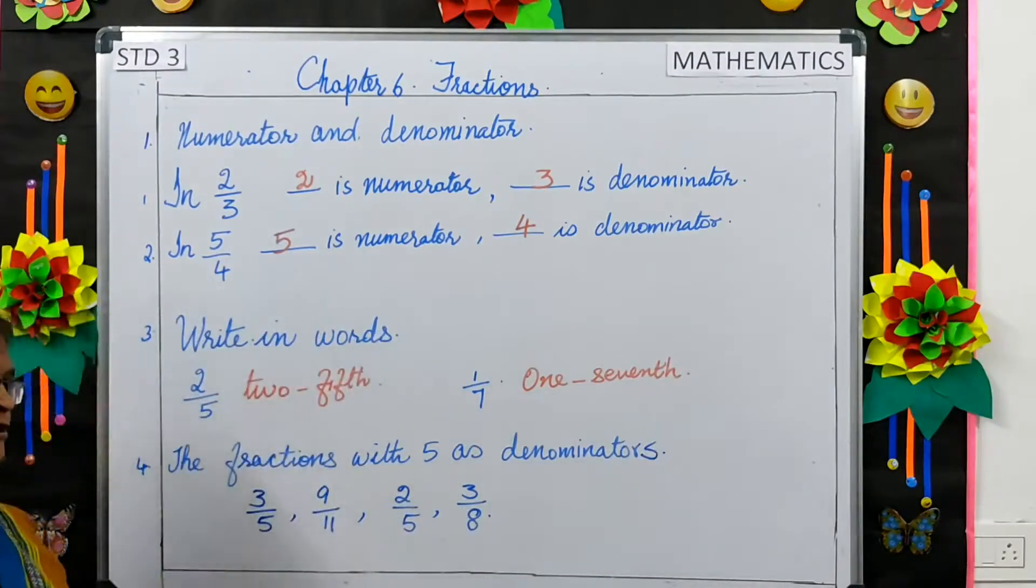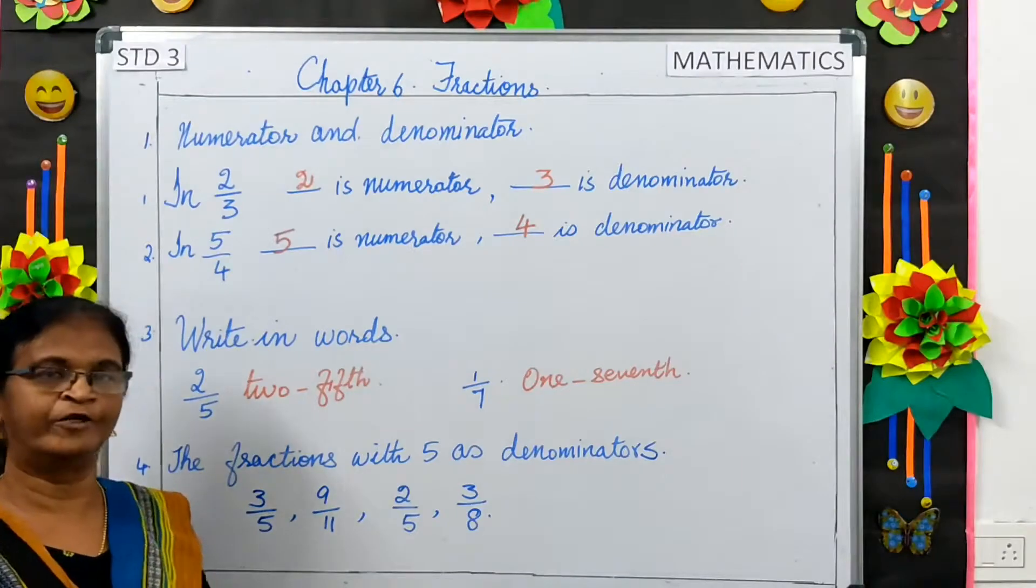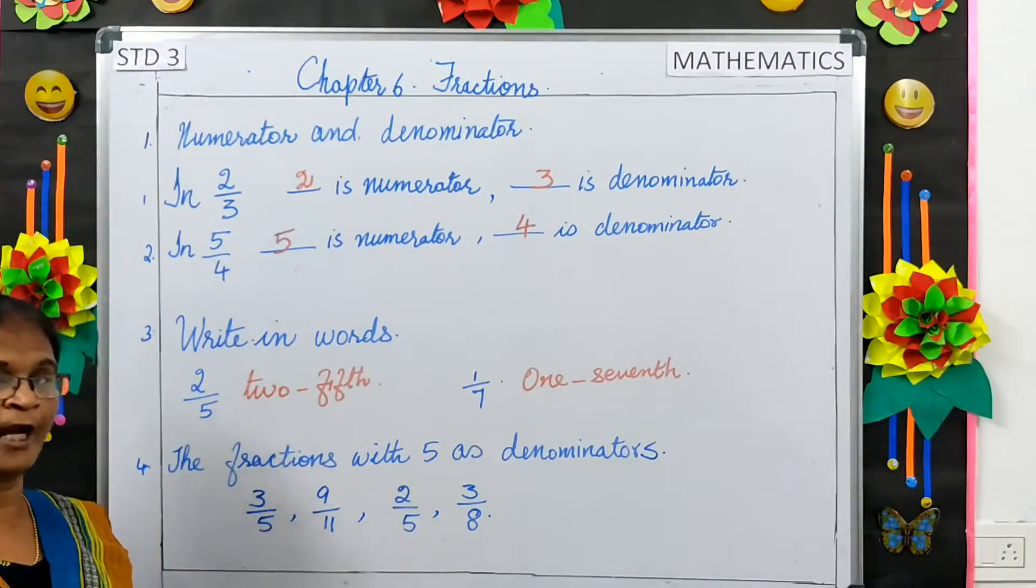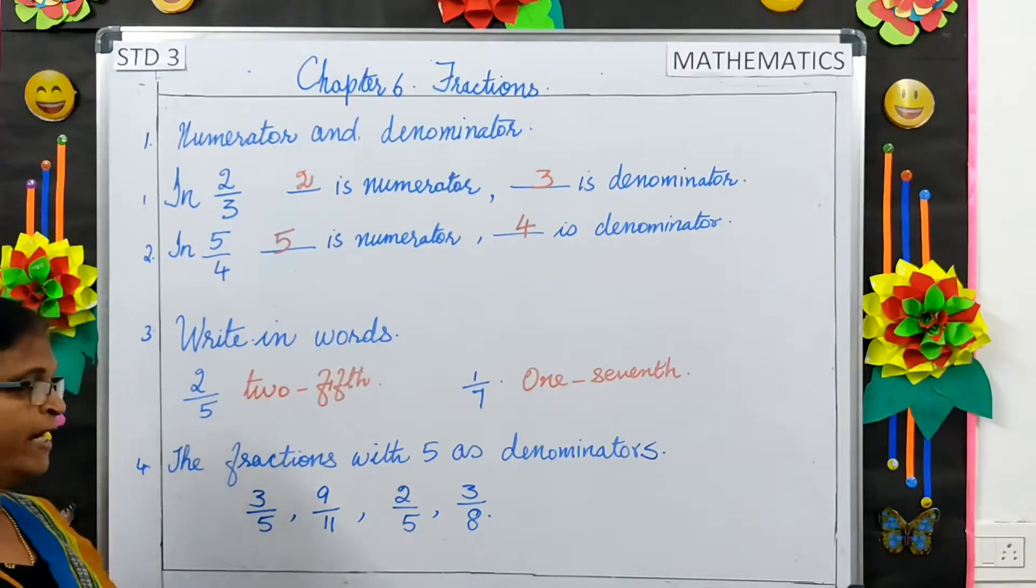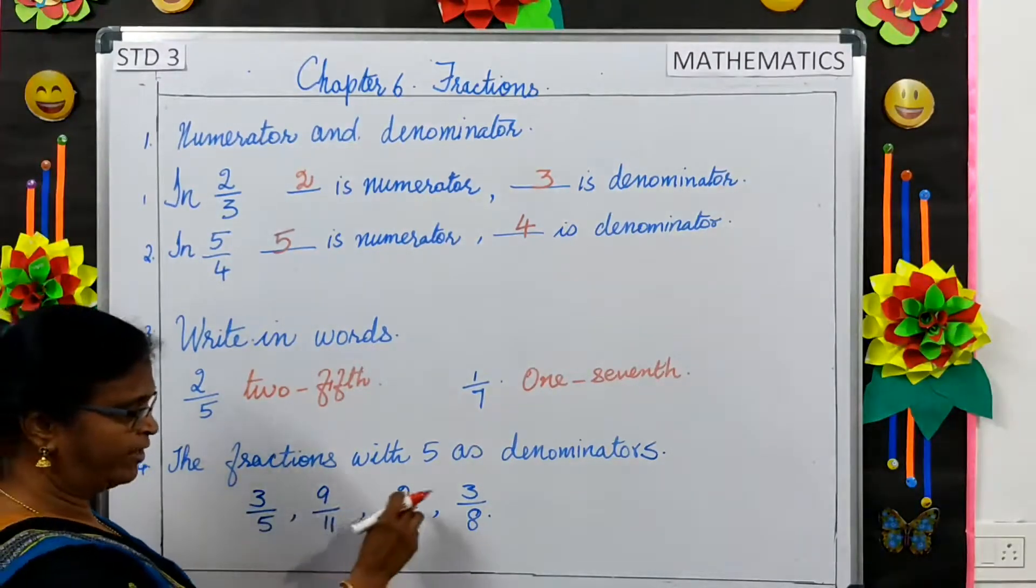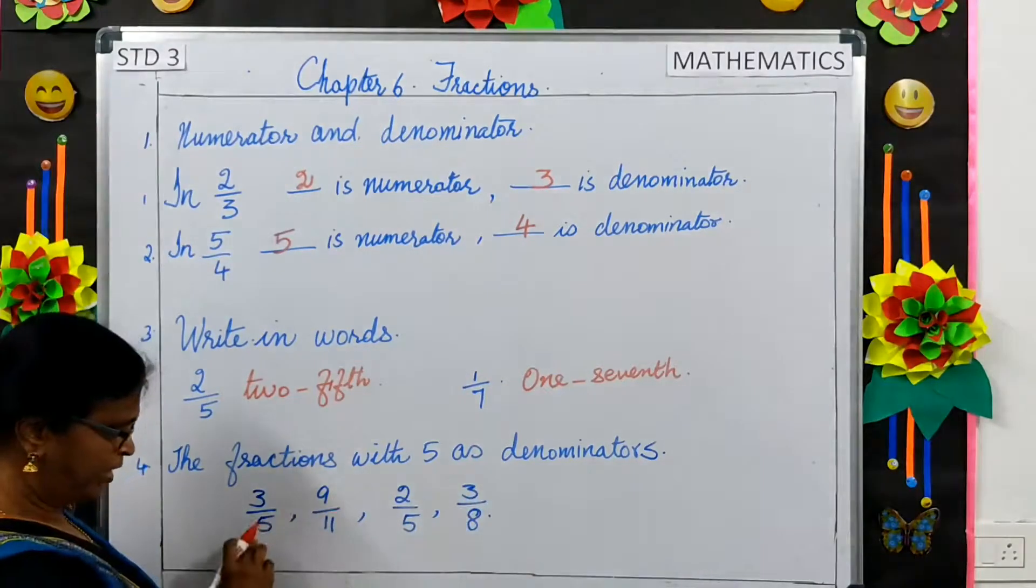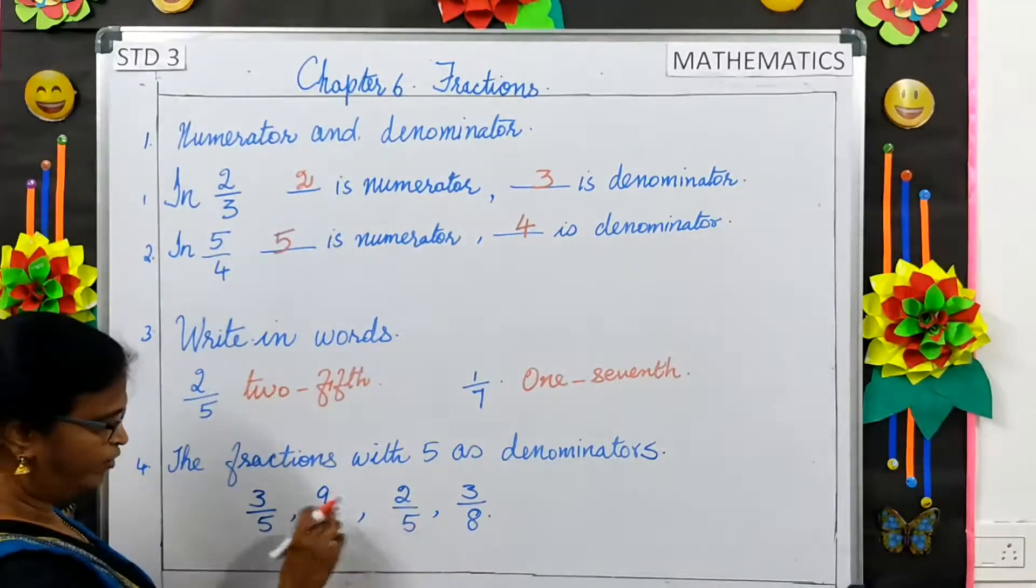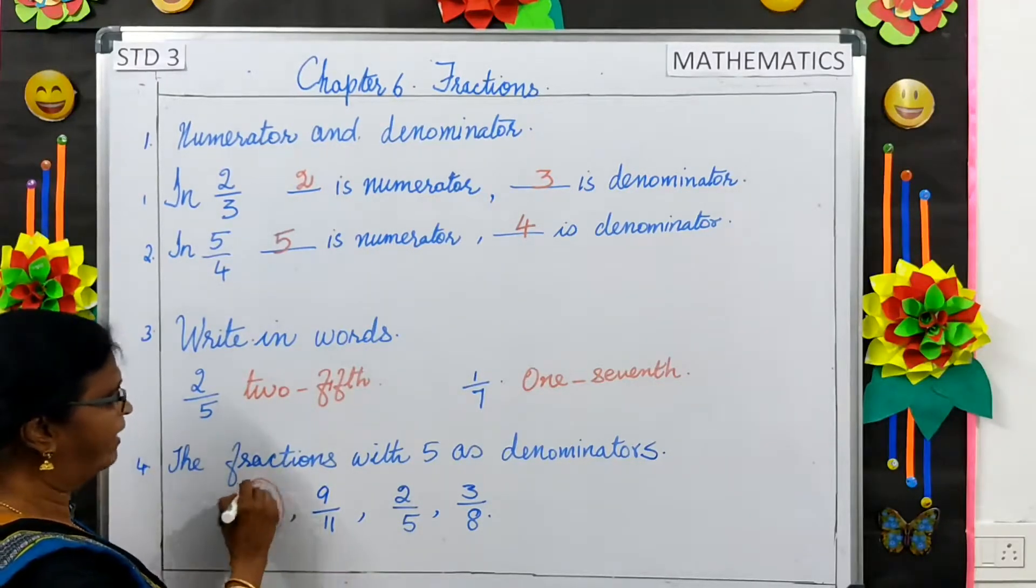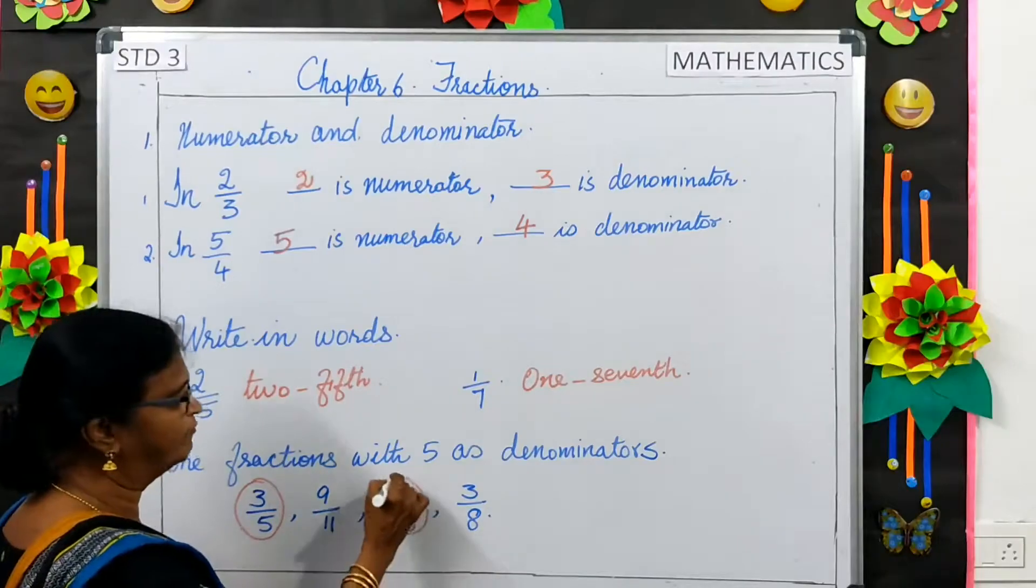The fractions with 5 as denominators. You all know the number below the line is denominator. Here 3 by 5, 9 by 11, 2 by 5, 3 by 8. Here, 2 numbers are with 5 as denominators. That's 3 by 5 and 2 by 5.